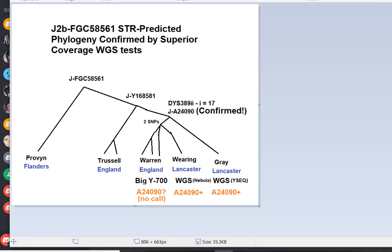He had coverage for A24-090, and he was positive. So if that was all that they found, then it wouldn't be enough information to know that all three of these guys, the two, the Warren, Waring, and Gray, descend from A24-090. But in addition to that,